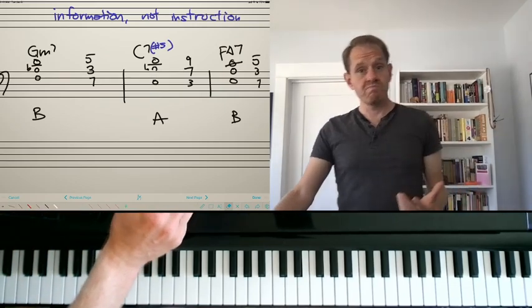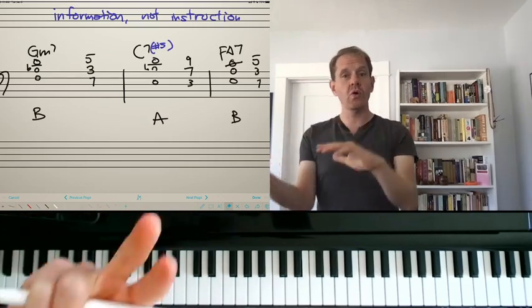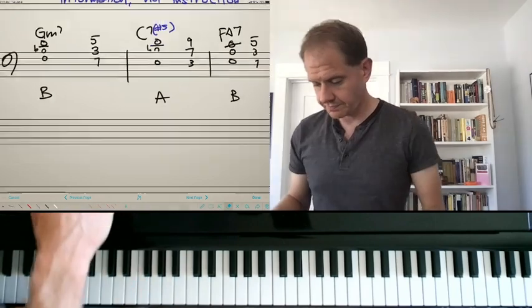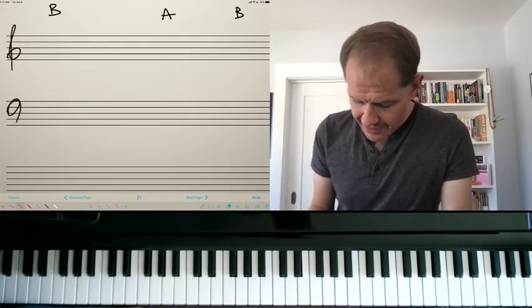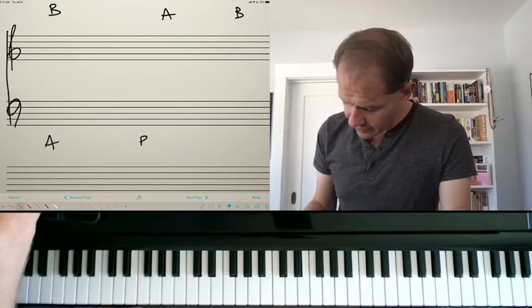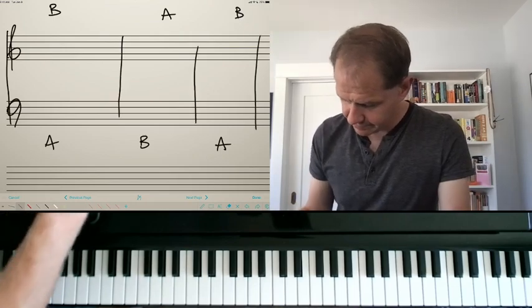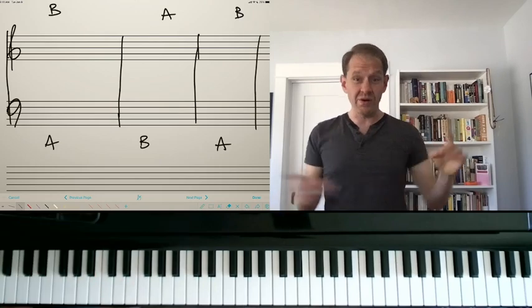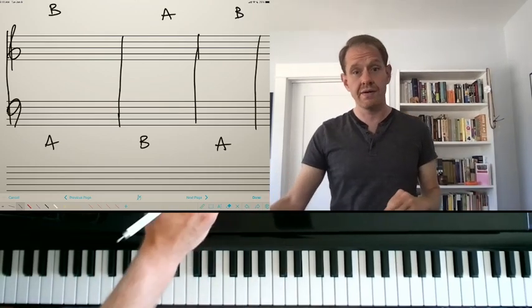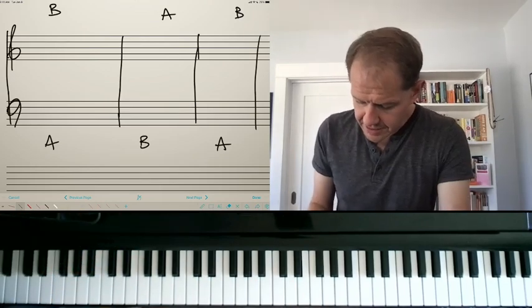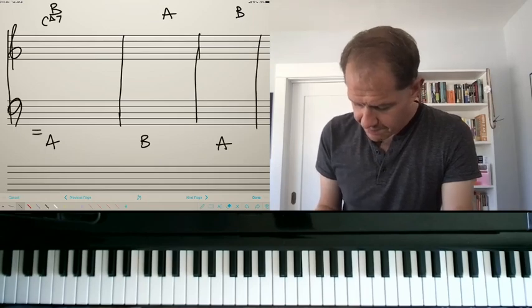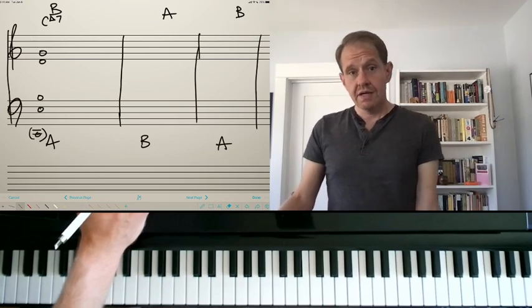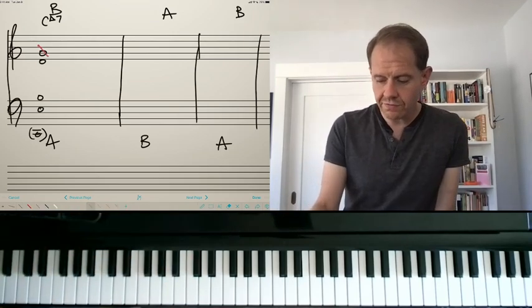So those are what we call 3-note shell voicings. You have your 2 essential tones, your 3rd and your 7th, and then you have the 5th or the 9th on top. I want to show you now it's slightly more complicated making a 4-note shell voicing. And it's slightly complicated because we have this problem. So the way that I would like to be able to teach this, and I'm showing this to you so that you can have a really deep understanding instead of just—I could give you a formula, and I will give you a formula, but I want you to really understand on a deep level why some of these things are the way they are.